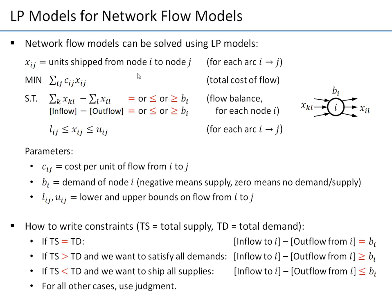The objective is usually minimizing total cost: take the sum product of all unit costs cij times all decision variables xij, which represent units shipped. This sum can be very large if the network is large. Sometimes there are alternative objectives like maximizing, but the standard objective is minimizing total cost.